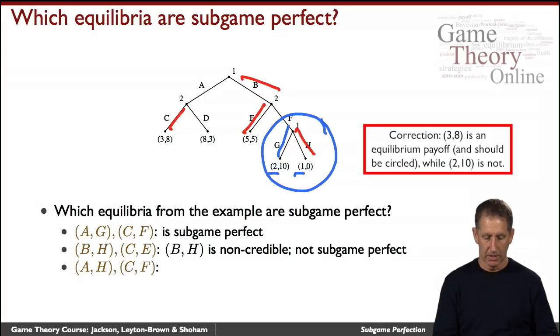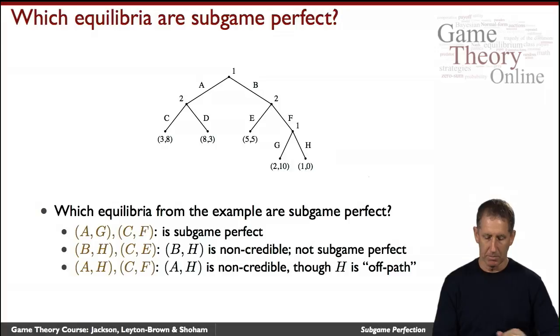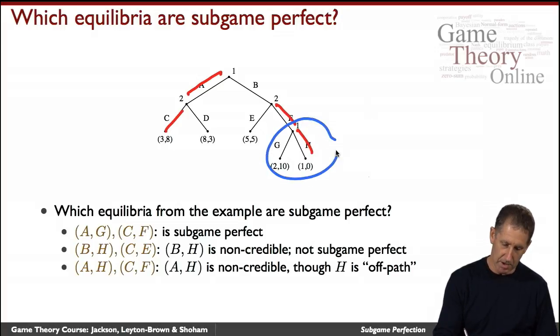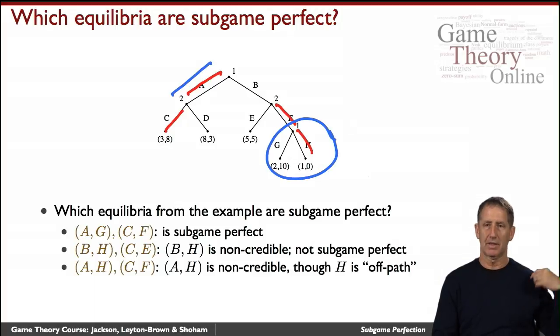And in fact, for the same reason, A-H-C-F will not be subgame perfect. You can check that it's a Nash equilibrium, but it is not subgame perfect. Again, this subgame here allows for a profitable deviation on the part of Player 1. So even though it's what's called off-path, even though Player 1 makes sure that he never gets to visit this node by going down here, even so it's not subgame perfect because had he gotten here, he would not have done what he claims he would have done. And that gives us a good sense for what a subgame perfect Nash equilibrium is.